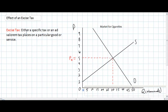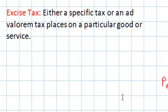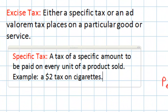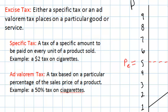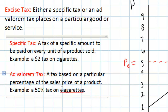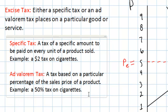So this raises the question: what is the difference between a specific excise tax and an ad valorem excise tax? A specific tax is a tax of a specific amount paid on every unit of a product sold — for example, a $2 tax on each pack of cigarettes. In contrast, an ad valorem tax is based on a particular percentage of the sales price of a product. For instance, a 50% tax on a pack of cigarettes would be considered an ad valorem tax. This differs in that it is not always the same dollar amount; rather it is based on a percentage of the sales price.